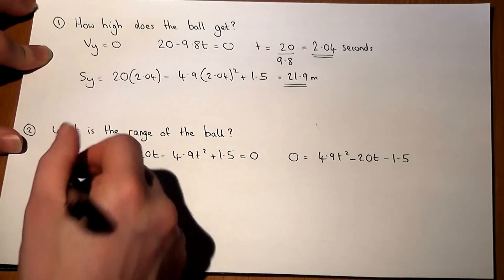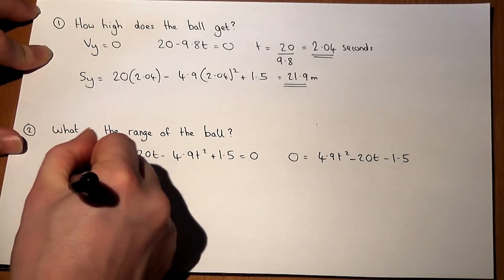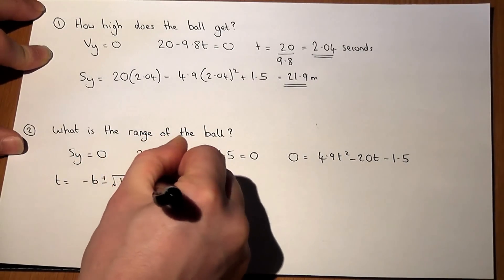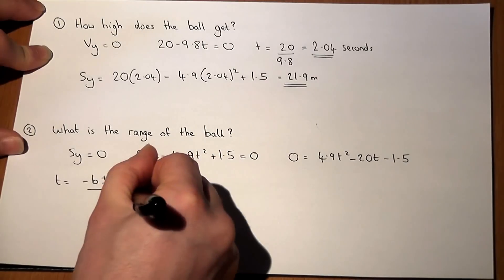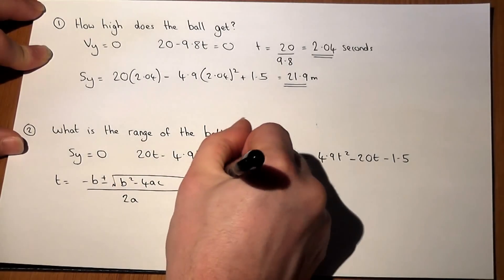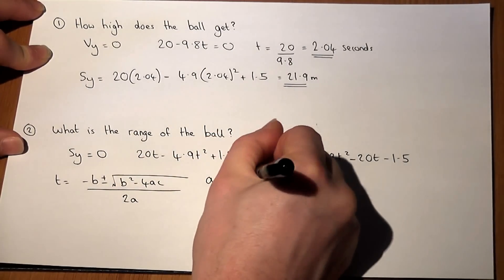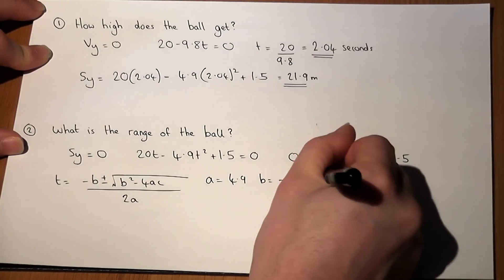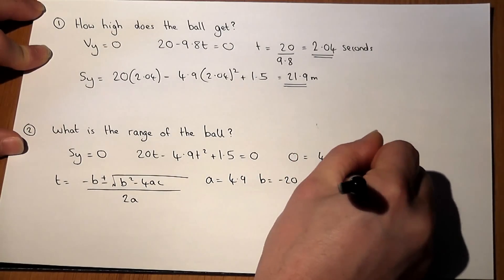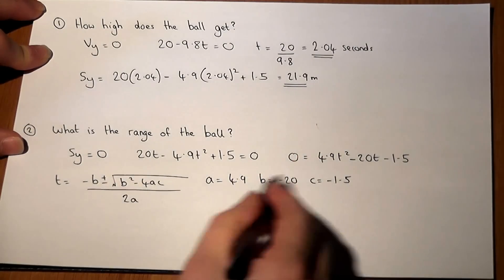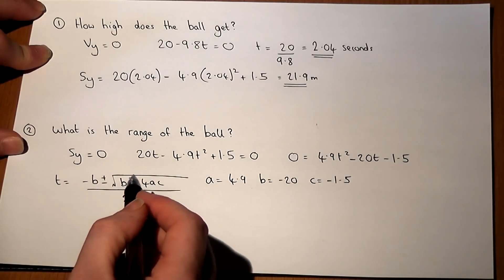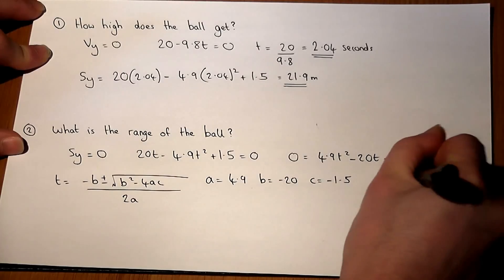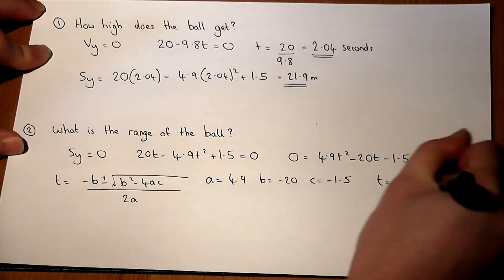So we use a formula. So t would equal minus b plus or minus b squared minus 4ac all over 2a, where a equals 4.9, b equals minus 20, and c equals minus 1.5. If you put these values into the equation, you find the positive time is at 4.155 seconds.